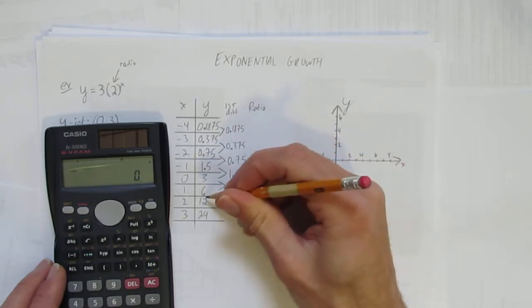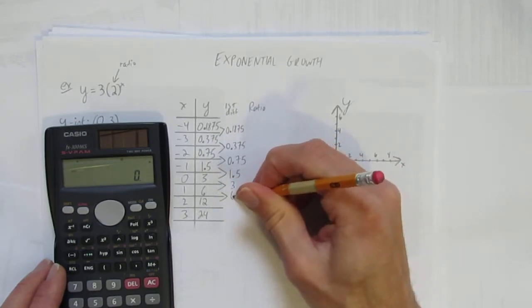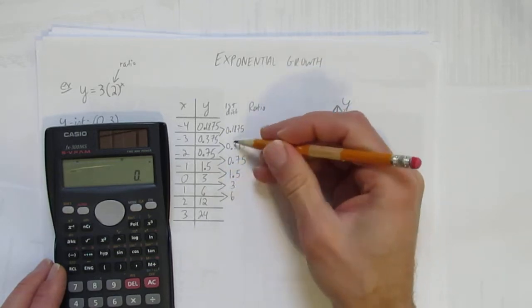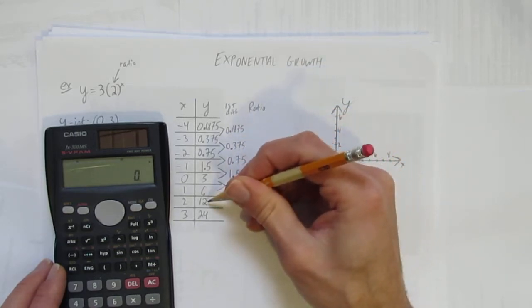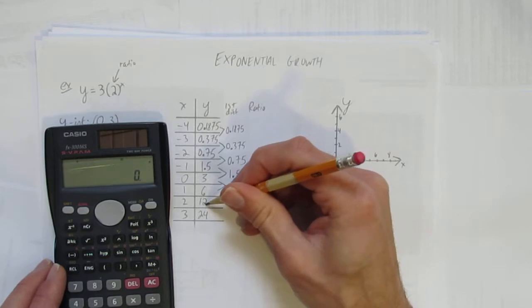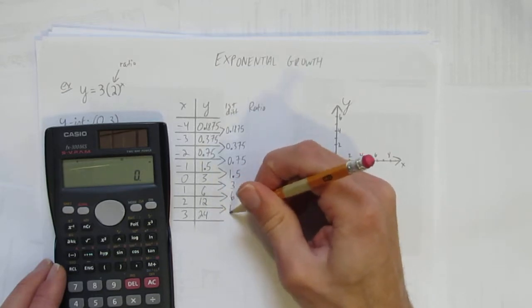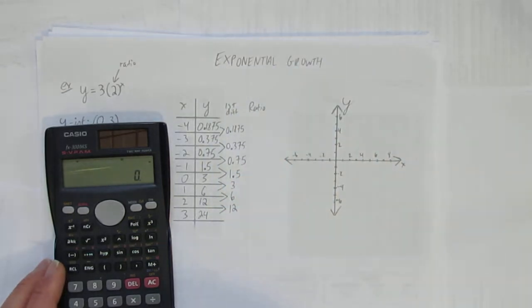What's 6 take away 3? 3. What's 12 take away 6? 6. And even if you can't do the math in your head, you should just notice the pattern. I can just look at the next number: 24 take away 12, it's going to be that number—12. First differences done.